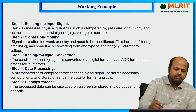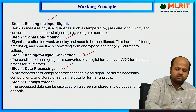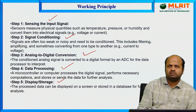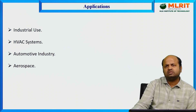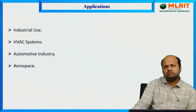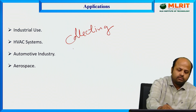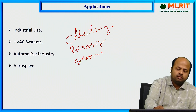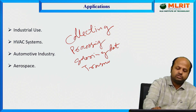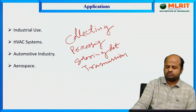The working principle: first there is sensing of the input signal through a transducer or sensors, then signal conditioning, ADC conversion, data processing, and display unit. The application of data acquisition systems — they are widely used in industries, HVAC systems, automotive industries, and aerospace sectors. To summarize, a data acquisition system is about collecting data, processing data, and storing or transmitting the data. Collection, processing, and storing are the main components. Thank you.